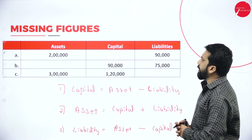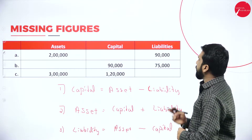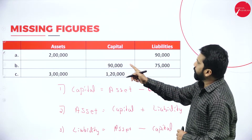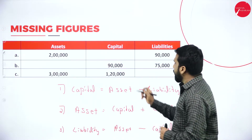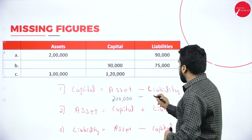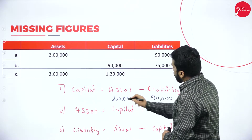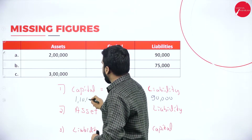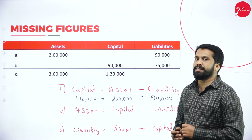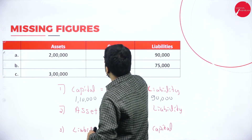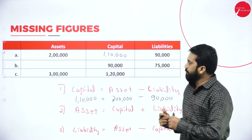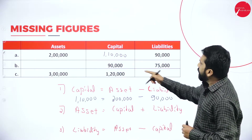Now let's apply these formulas. Example one: capital is missing but we have information about asset and liability. Asset is two lakh, liability is ninety thousand. So two lakh minus ninety thousand gives you one lakh ten thousand. Your capital is one lakh ten thousand. If you get problems like this, it will be a bonus for you.